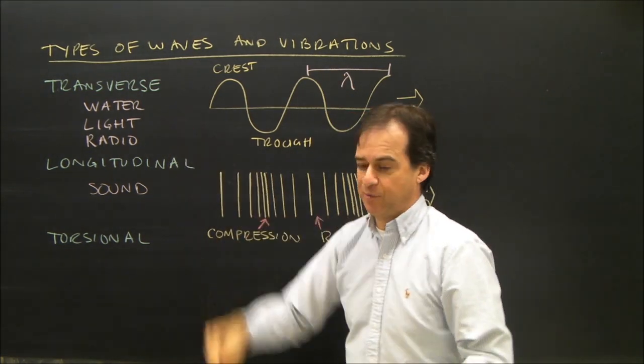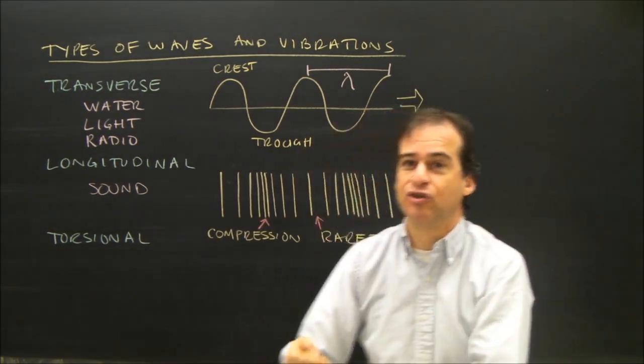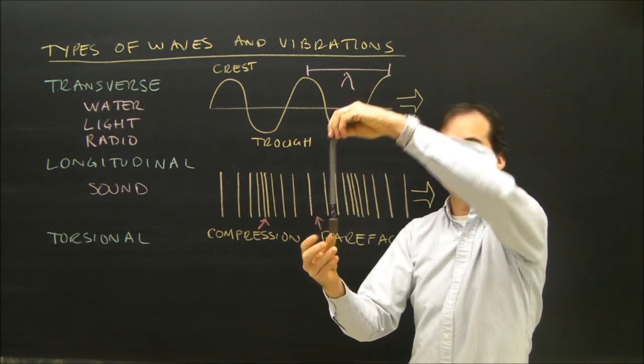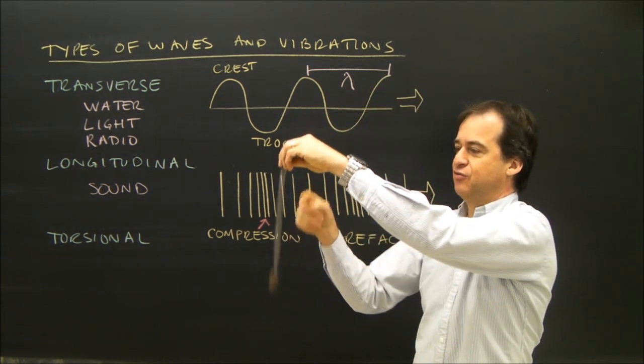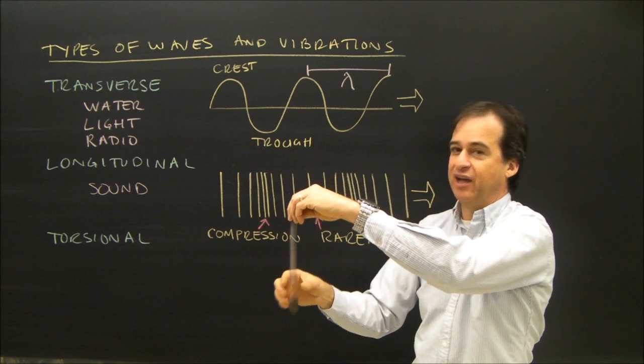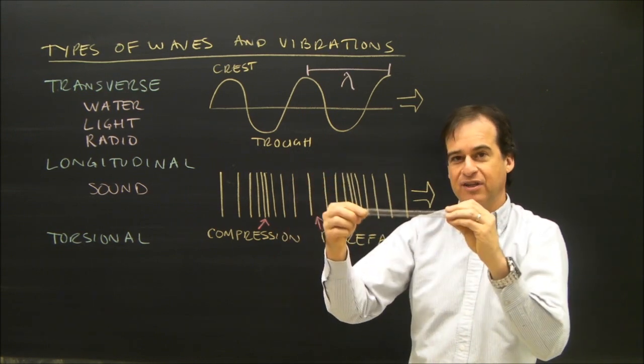So that's a transverse vibration. We can have a longitudinal vibration that's along the axis, the longitudinal along the axis. This is vibrating longitudinally and can create a longitudinal wave in the spring.